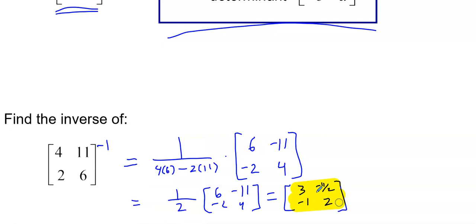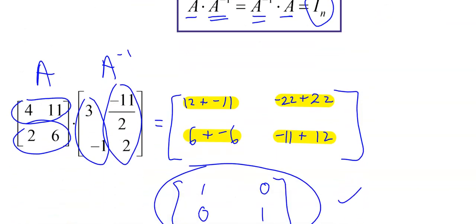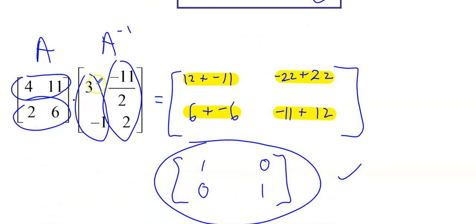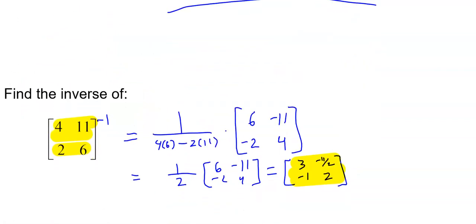So this matrix and this matrix are inverses of each other. In fact, looking back at the notes: the original matrix was [4, 11; 2, 6] and the inverse we found is [3, negative eleven halves; negative 1, 2]. Those are the matrices we just tested — they are indeed inverses. So we found the inverse using the formula.